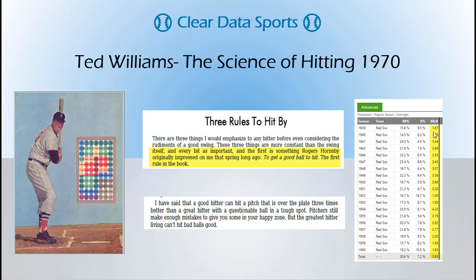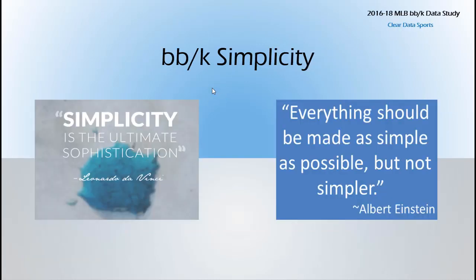If you look at Ted Williams, his BB divided by K never went below one. Some players like Bellinger are right around the best in baseball at a ratio of one — pretty amazing plate discipline. BB divided by K goes back to that plate discipline. It's a really simple stat, and I wanted to include this because sometimes we make things too complex. Simplicity is the ultimate sophistication — that's Leonardo da Vinci. And Einstein said everything should be made as simple as possible, but not simpler.